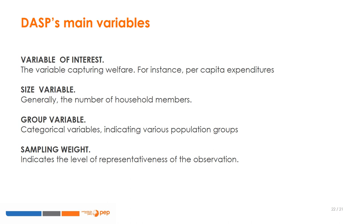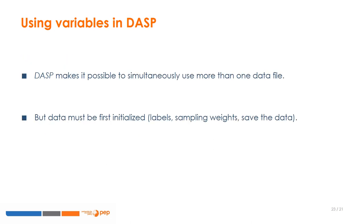The sampling weights are the inverse of the sampling probability, and this variable should be set upon the initialisation of the dataset. As mentioned earlier, the user can use multiple datasets at the same time. To do so, each data file must first be initialised.